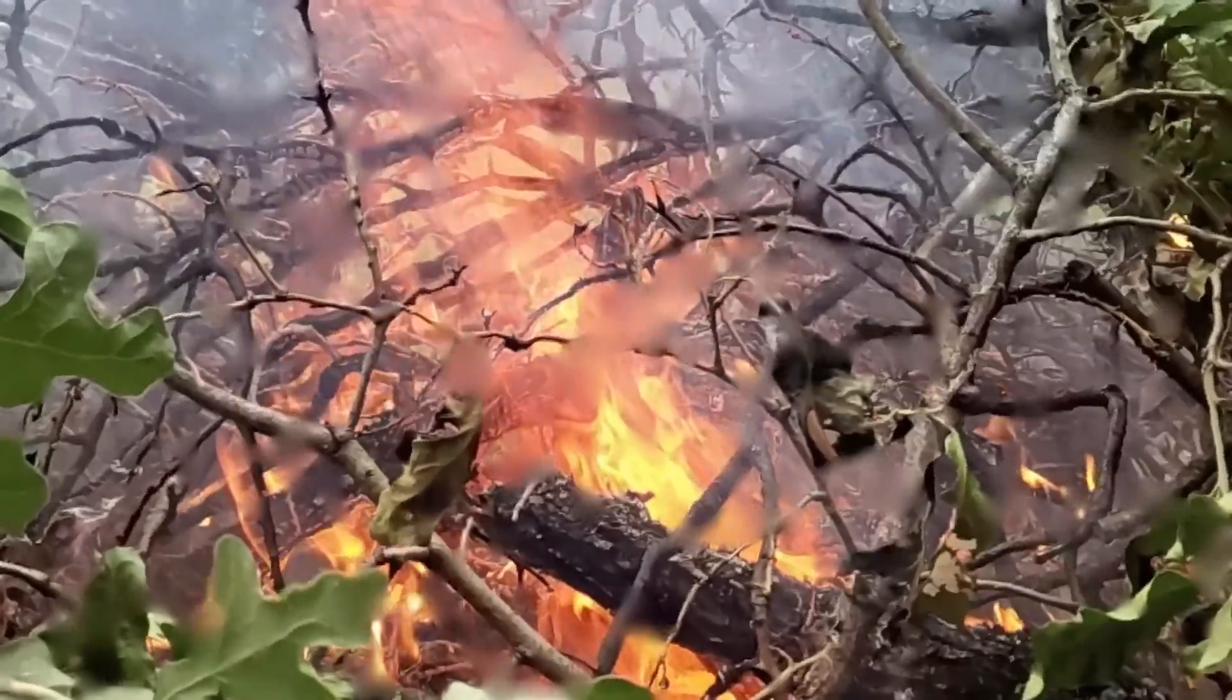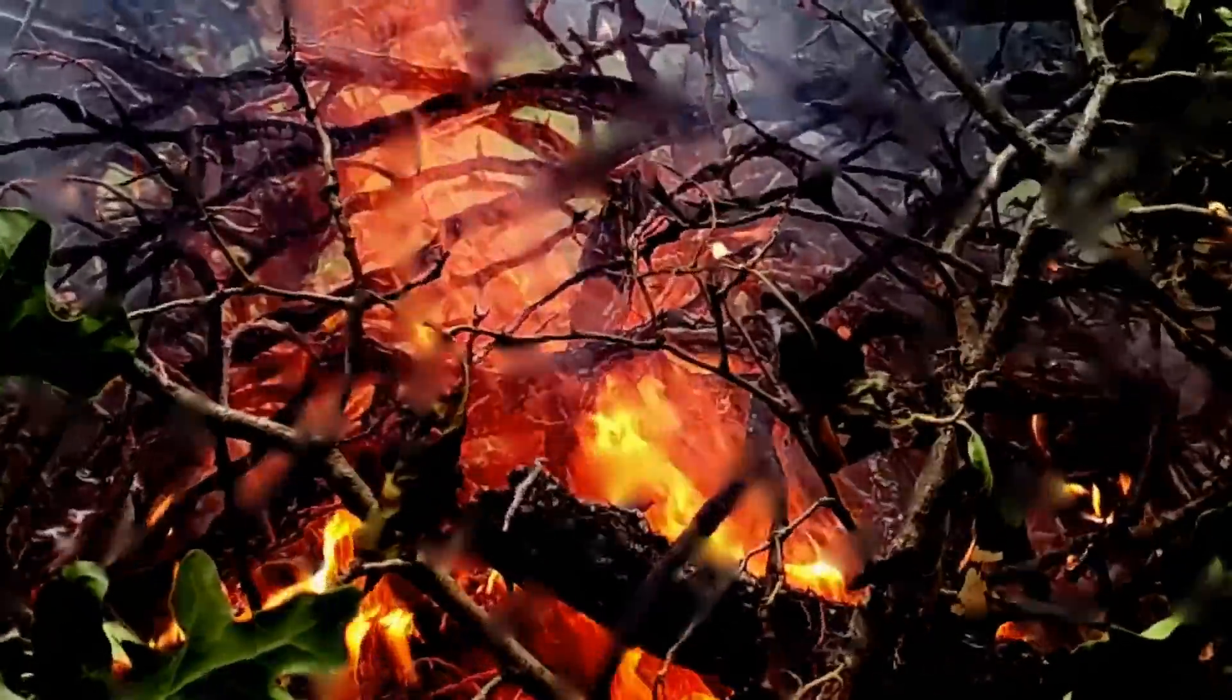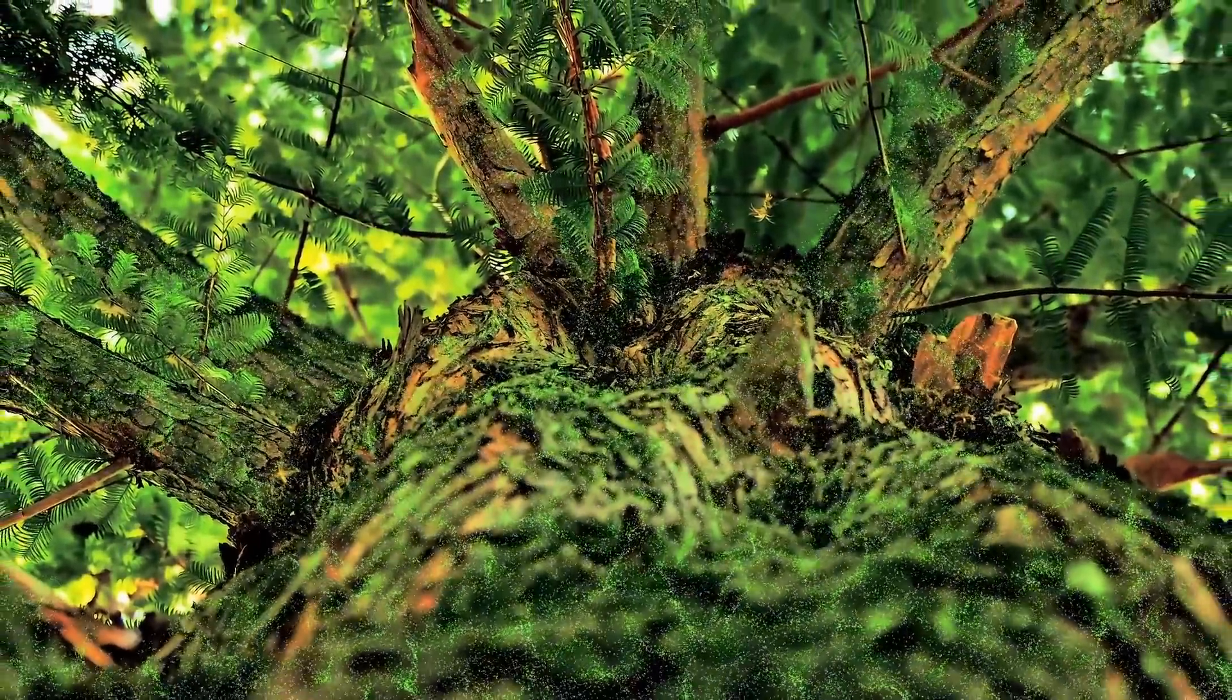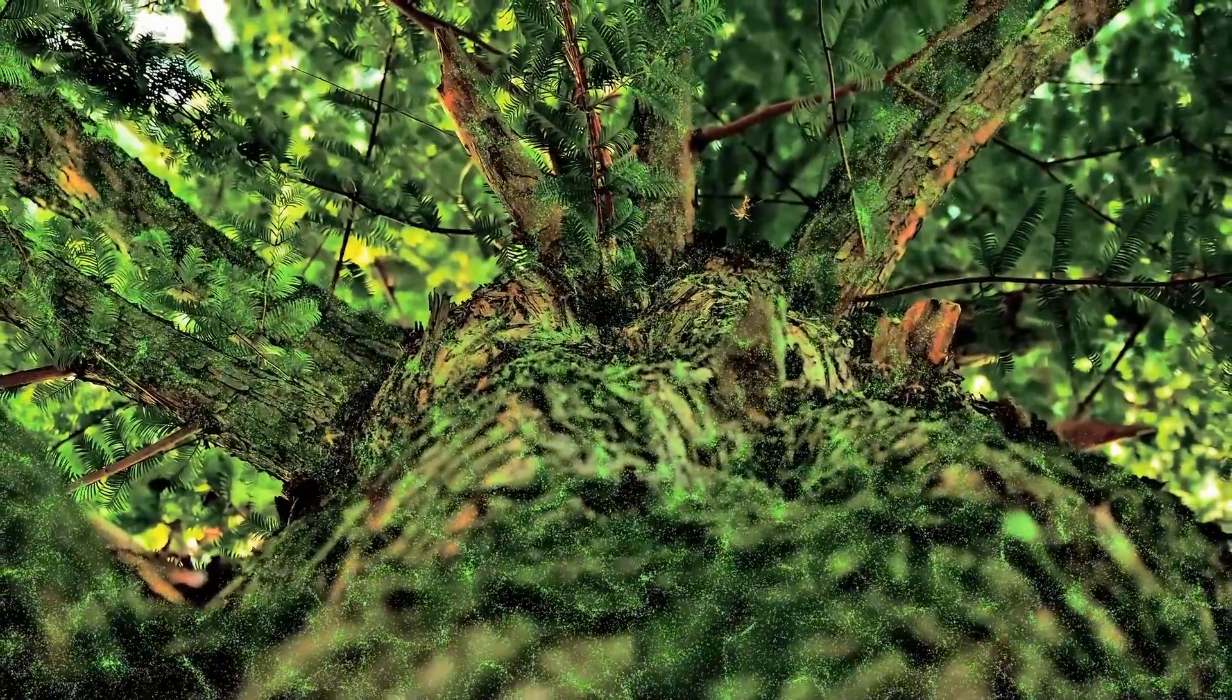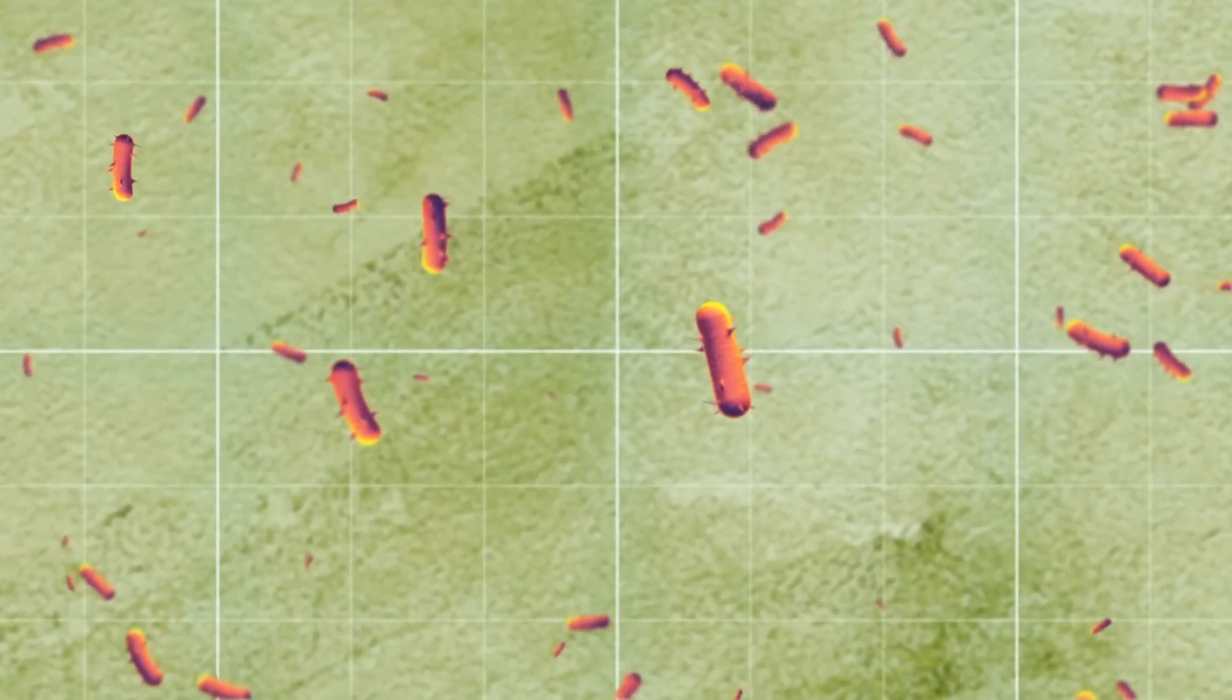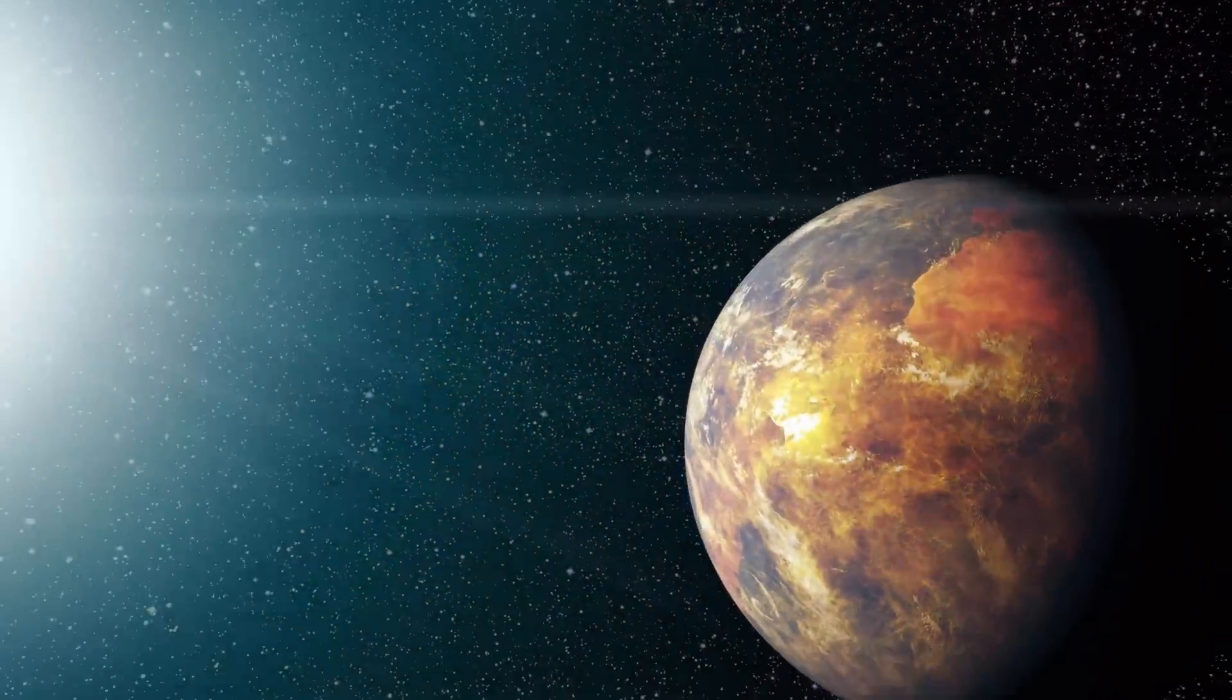Plants that miraculously survived the fires would die within a few weeks from lack of sunlight. Large trees could survive for decades due to the accumulation of sugars in their tissues and slow metabolism. With the exception of some microorganisms and small creatures, the Earth's surface would become virtually uninhabited.